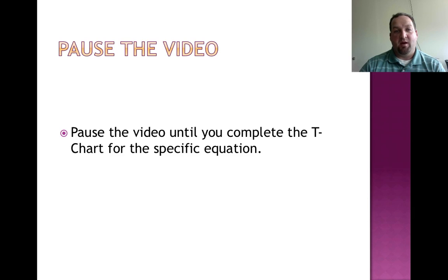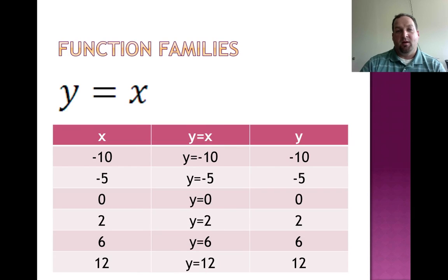Let's check our answers for Y equals X. See if what you have for the t chart matches mine. This is the completed t chart. What you should find is that no matter what you put in for X or the domain you should get exactly the same thing out for Y. So negative 10, 10, negative 5, 5, 0, 0, 2, 2, 6, 6 and 12, 12. Very easy. These are also ordered pairs.